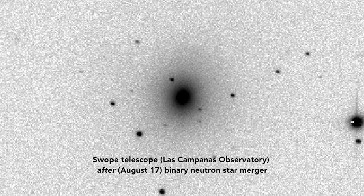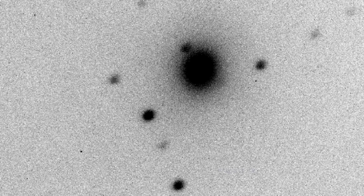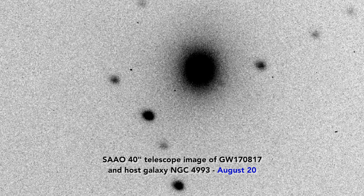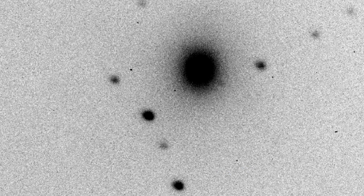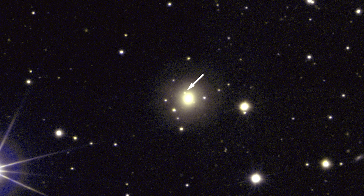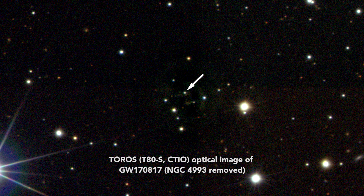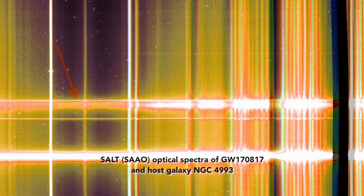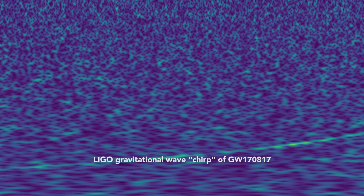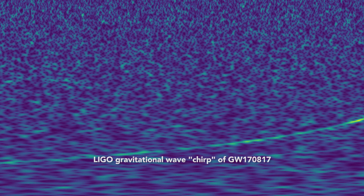We've entered a new realm in astronomy where it's possible to detect objects through electromagnetic radiation, cosmic rays, and gravitational waves. Multi-messenger astronomy means that you get information from totally different things than the electromagnetic radiation we usually deal with in astronomy — optical light, infrared, radio, gamma rays. But when you get information through other means, like neutrinos or gravitational waves, that's what makes it multi-messenger astronomy.